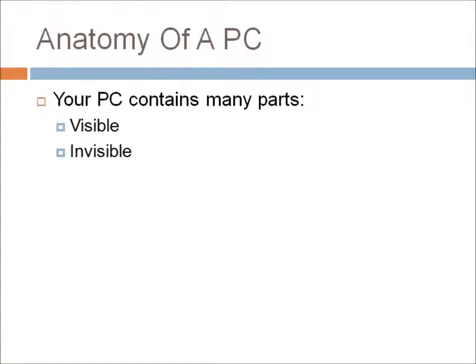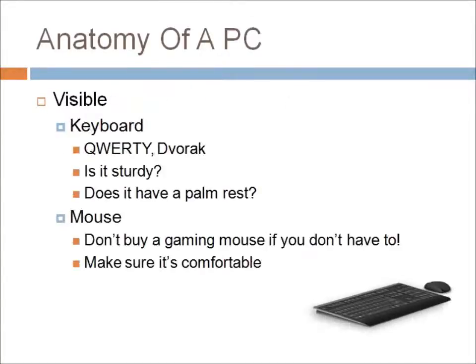So, I have a PC. Your PC contains many parts. The two main things you need to bear in mind is that there are things that you can see on your computer and things that are invisible — things that you can't see but do need. For the visible pieces of your PC, we have the keyboard.